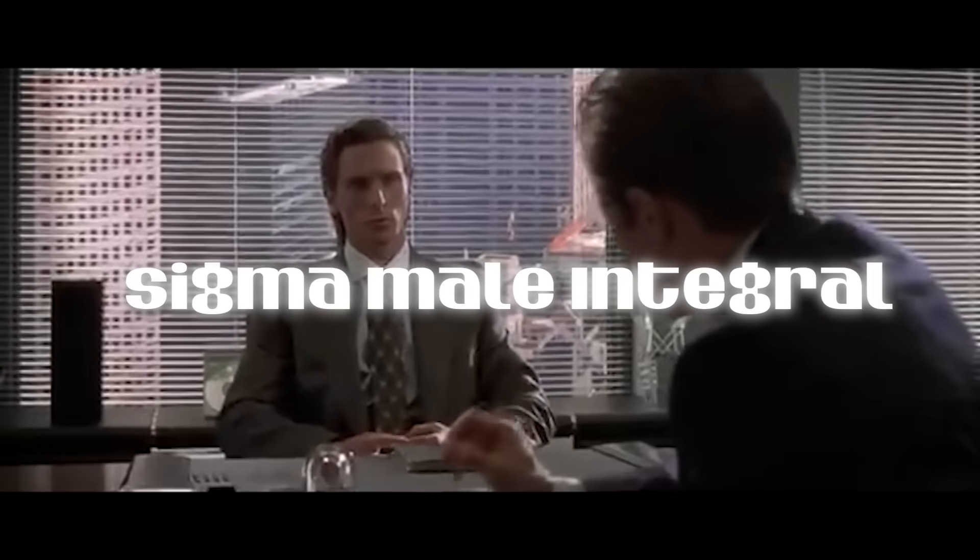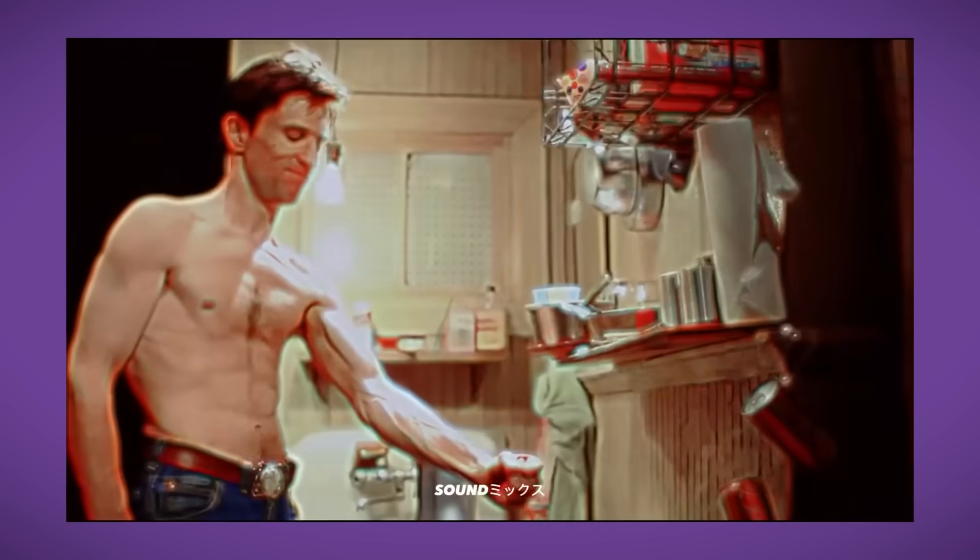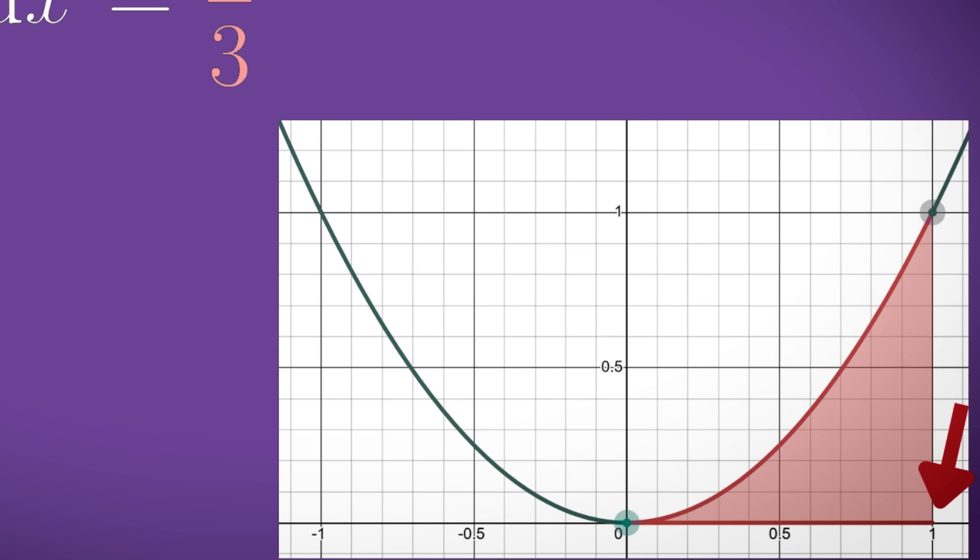8. Sigma male integral. Now if you're a beta male then you might not understand this but us sigma males know that approximations are always better than the exact value. Especially when the approximation takes more time and energy to work out than the actual value. And that's why we have sigma male integrals.